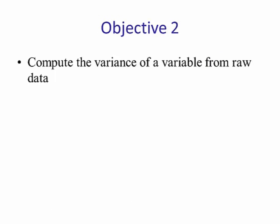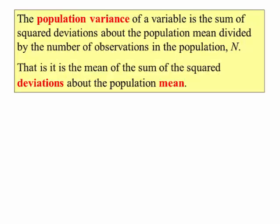Lesson objective number 2: Compute the variance. The population variance of a variable is the sum of the square deviations about the mean divided by the number of observations in the population n. That is, it is the mean of the sum of the square deviations about the population mean.